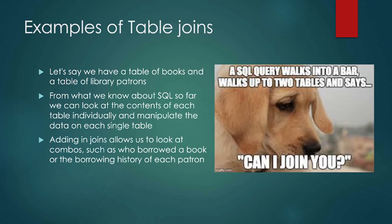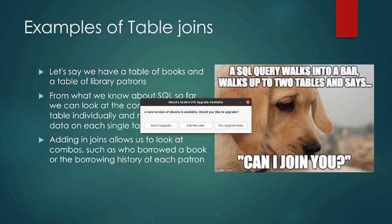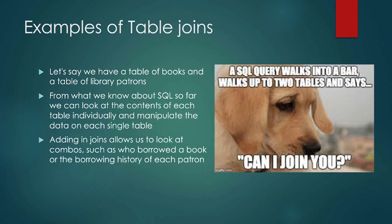Some examples of table joins: if we have a table of books and a table of library patrons, we could already look at the contents of each table individually. We could ask what books do we have, or where do all library patrons named Susie live. But adding in joins will allow us to have more information such as who borrowed a book or borrowing history.